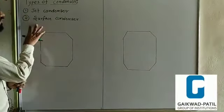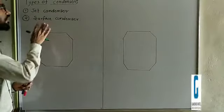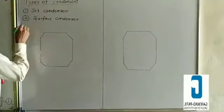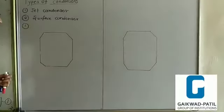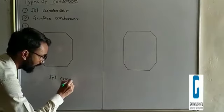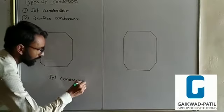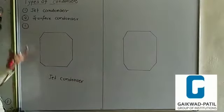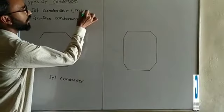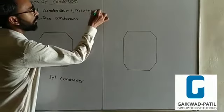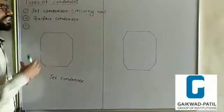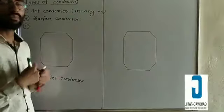Today we will discuss about what is the jet condenser and what is the surface condenser. Look at the first diagram for the jet condenser. This one is the jet condenser. The jet condenser is also known as a mixing type of condenser. Why is it called the mixing type of condenser?